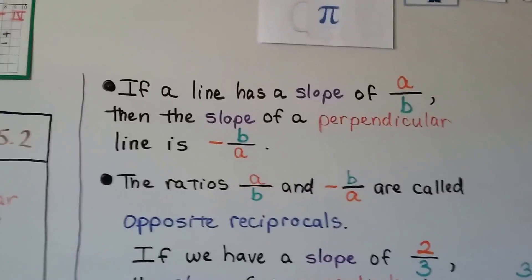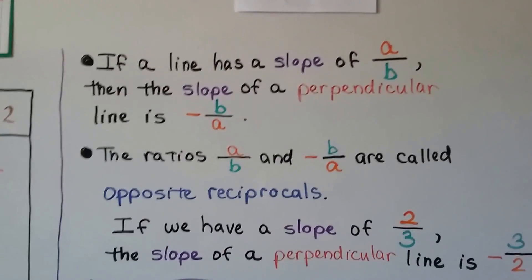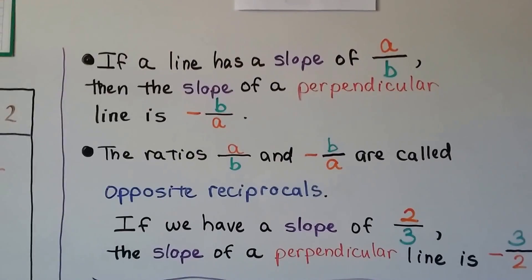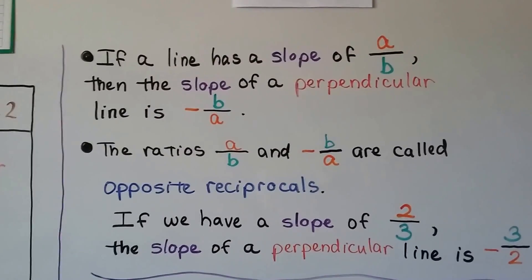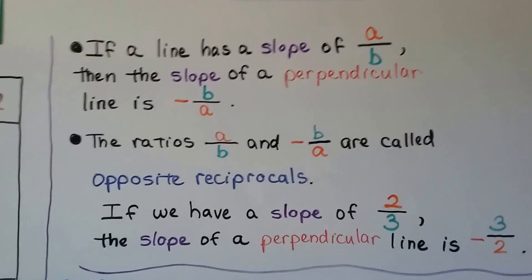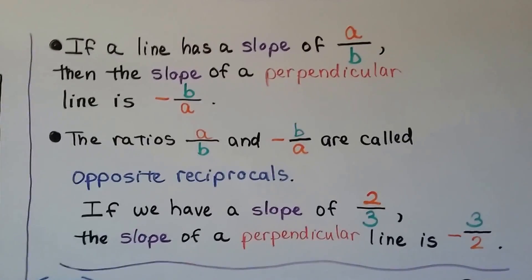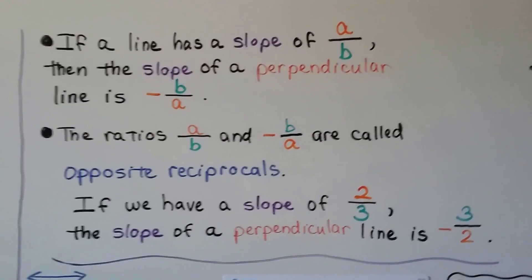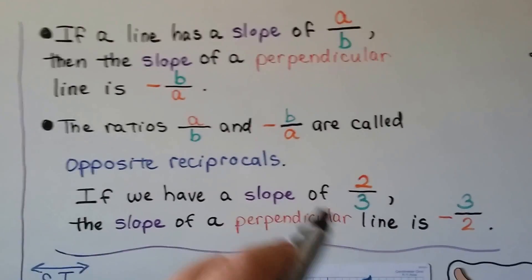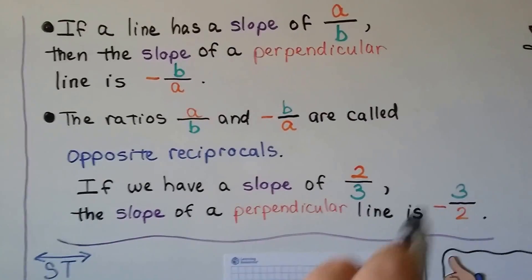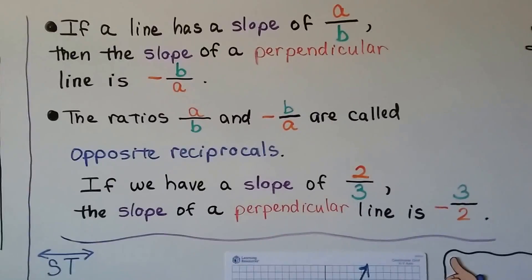If a line has a slope of a/b, then the slope of a perpendicular line is -b/a. The ratios a/b and -b/a are called opposite reciprocals. If we have a slope of 2/3, the slope of a perpendicular line is -3/2. So not only are they flipping around like a reciprocal, but we're putting a negative sign in front of it if that has a positive.